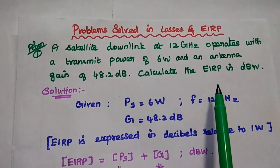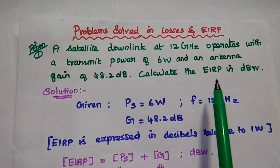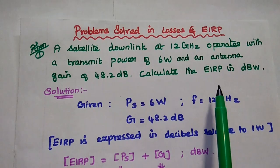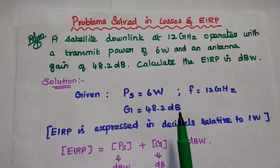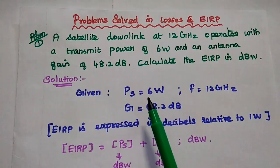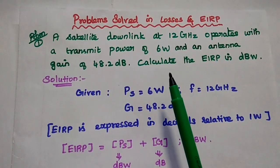What is meant by EIRP? It is the equivalent isotropic radiated power, which is an important parameter in satellite communication. In the solution part, first we have to write the given data.